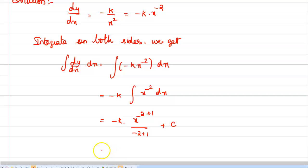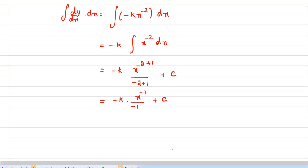This equals minus k times x to the power of 1 divided by minus 1, plus the integration constant. From this, we have y equals k by x plus c.